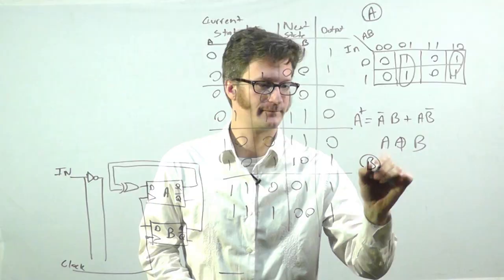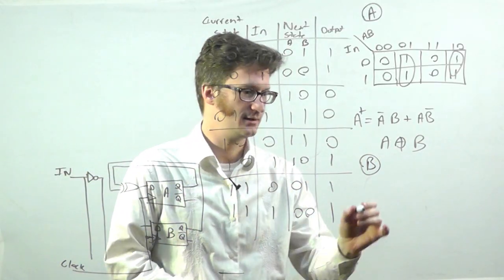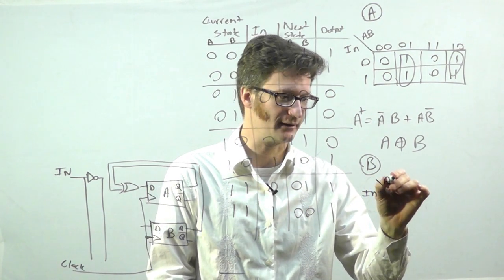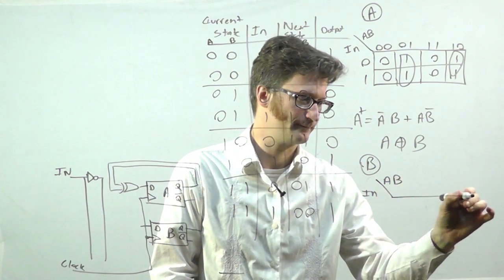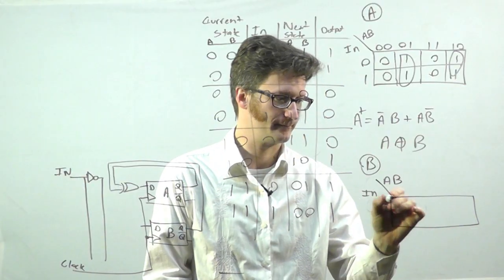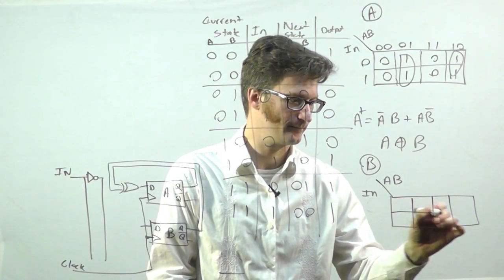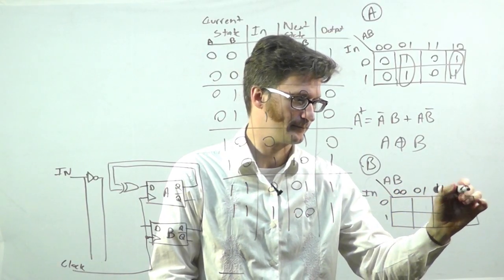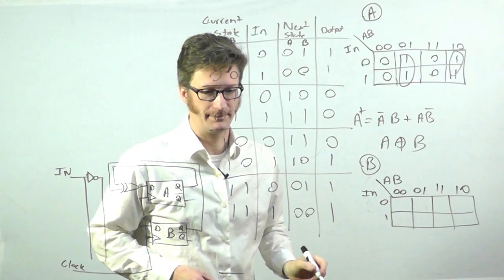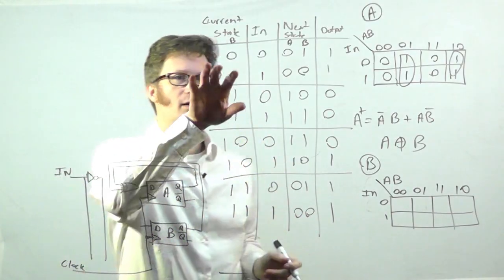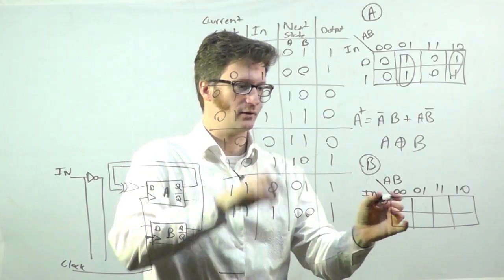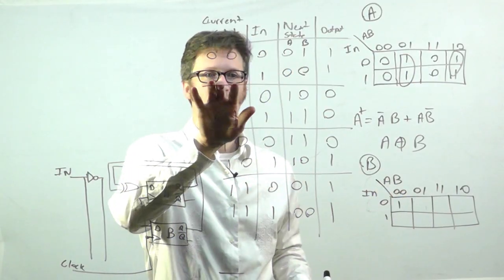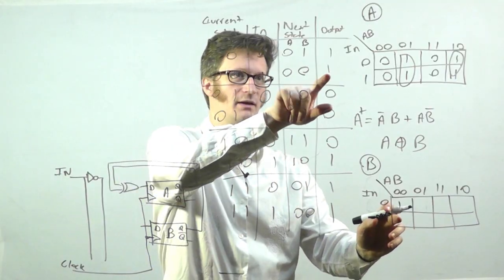So, now, let's do B. B is going to look like this. We still have IN here. And this is my current state, A and B. So, 0, 0, and 0. That corresponds to this box. For B, I need a 1. 0, 0, 1. I need a 0.